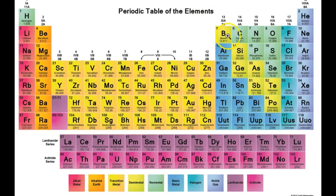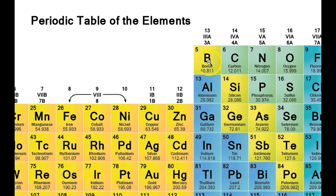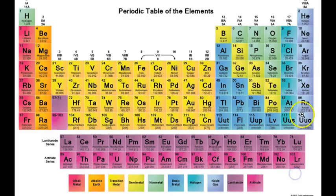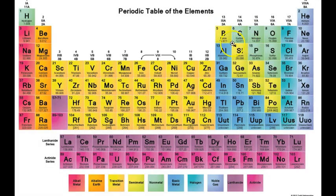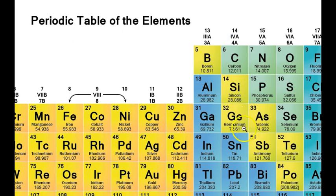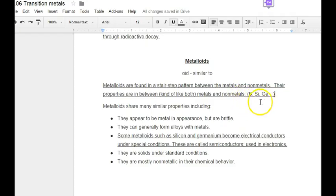Specifically, the metalloids we're talking about are boron, silicon, germanium, and arsenic. Sometimes antimony, tellurium, and polonium are also included. Once element 117 is officially agreed upon, it might be included as well, though there's a lot of debate on that. Boron, silicon, and germanium are your number one, two, and three examples.